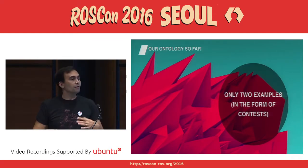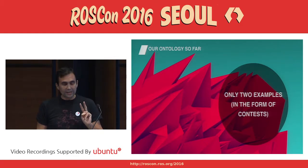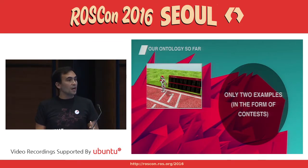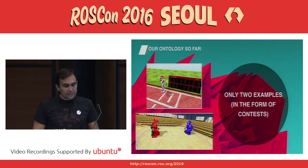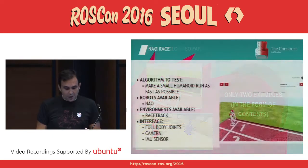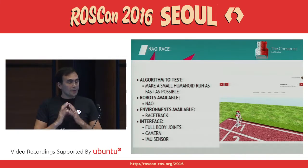At present we have two examples in the ontology, created in the form of contests. The first one is the NAO race and the second one is the sumo contest.